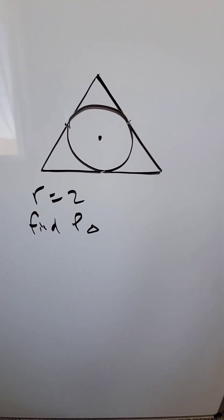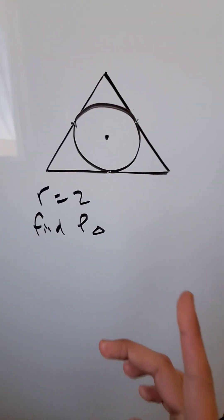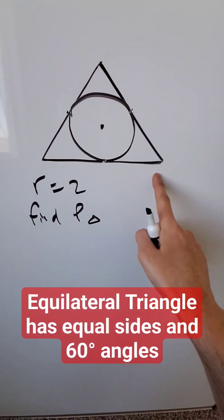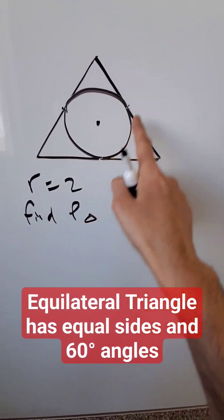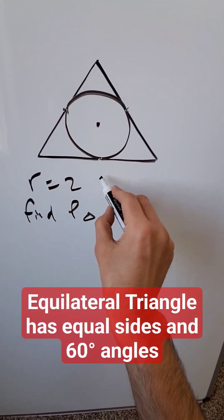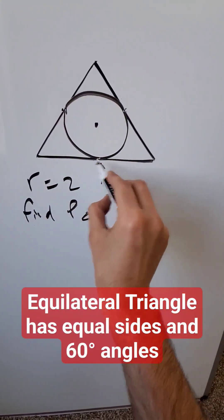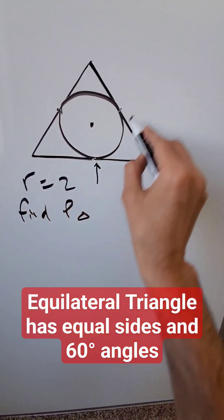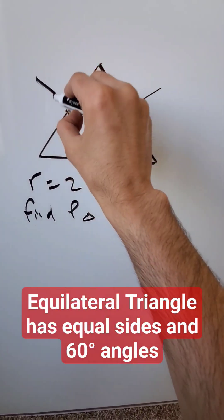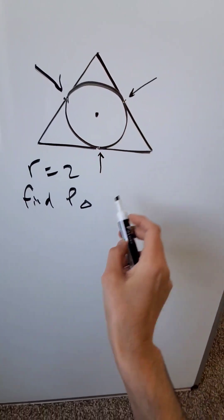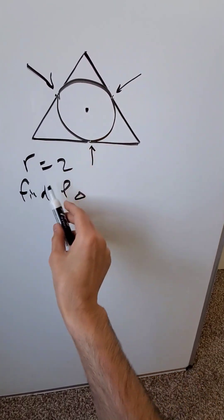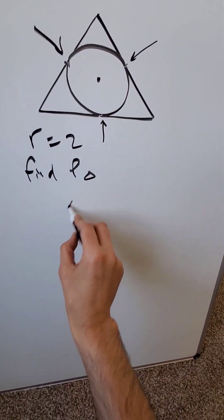We have an interesting geometry question here. A perfectly inscribed circle in an equilateral triangle — these are the points of tangential contact. Each of those points is dividing these segments into midpoints, which is a geometric property you are aware of. The radius is 2. What is the perimeter of that triangle?